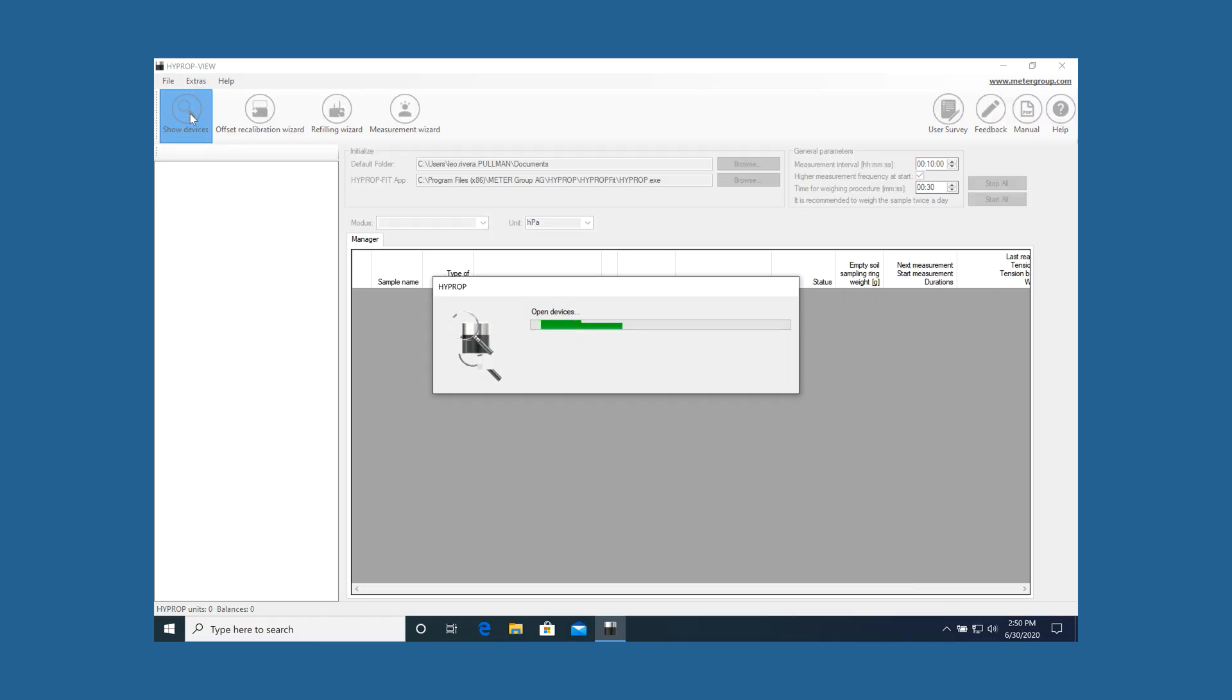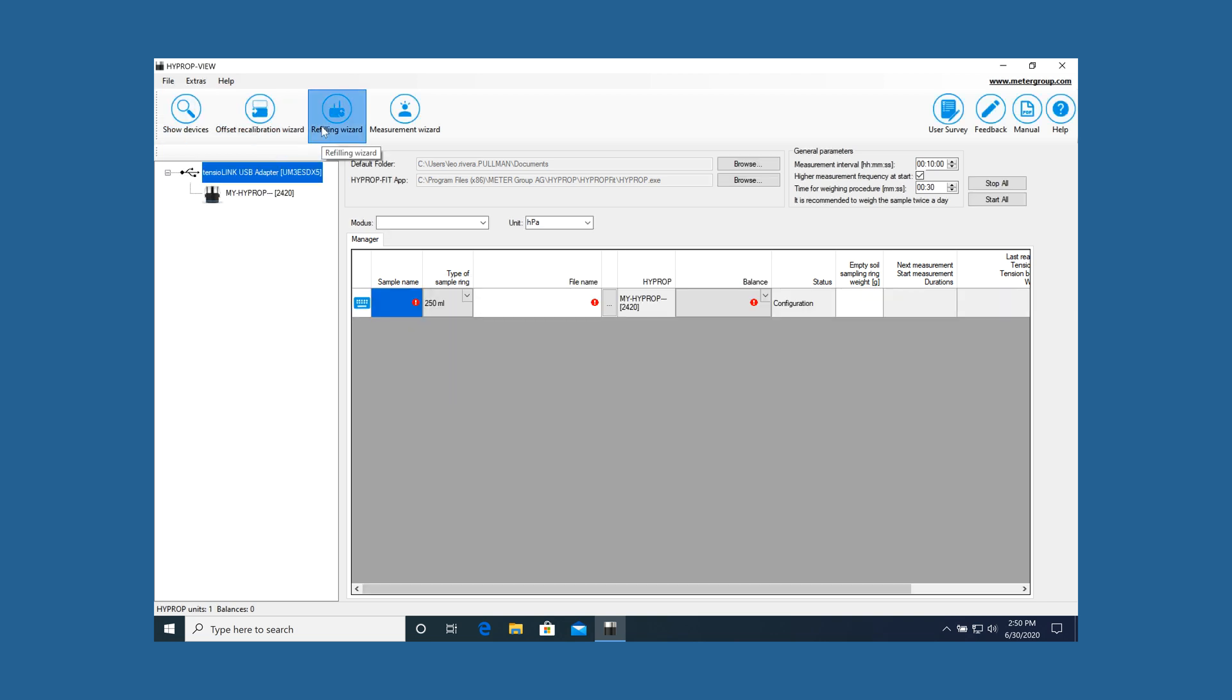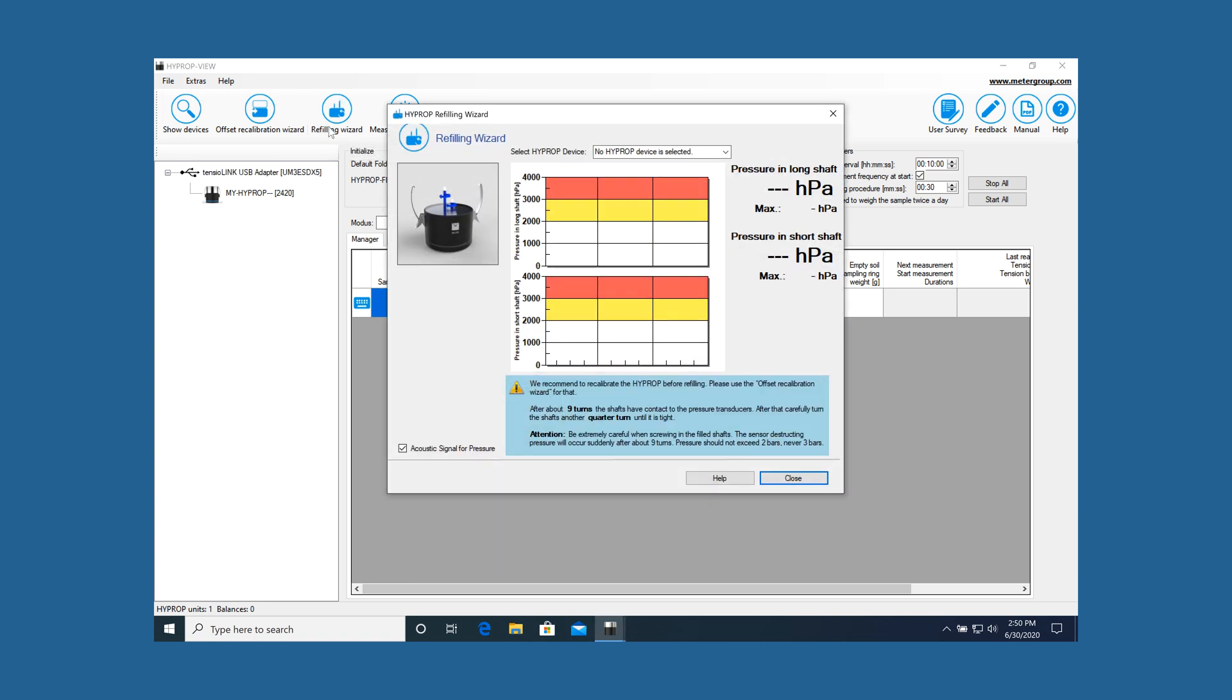Click on the Show Device icon. If you need to do an offset recalibration, see the manual for instructions. Click on the Refilling icon and follow the wizard.